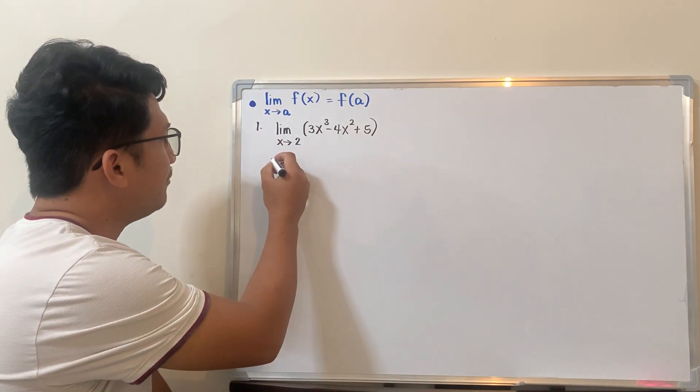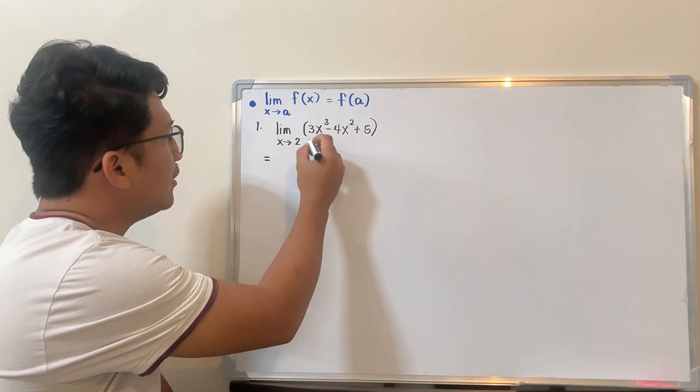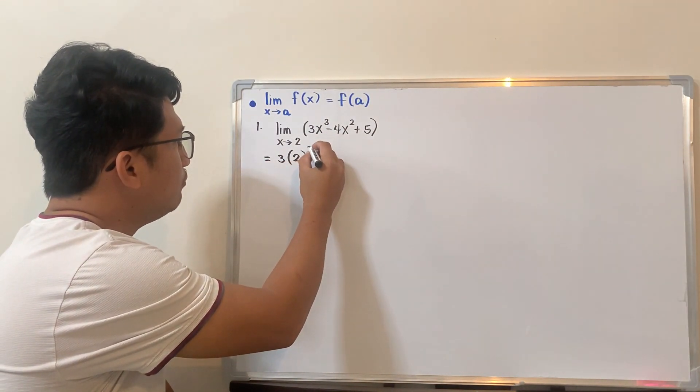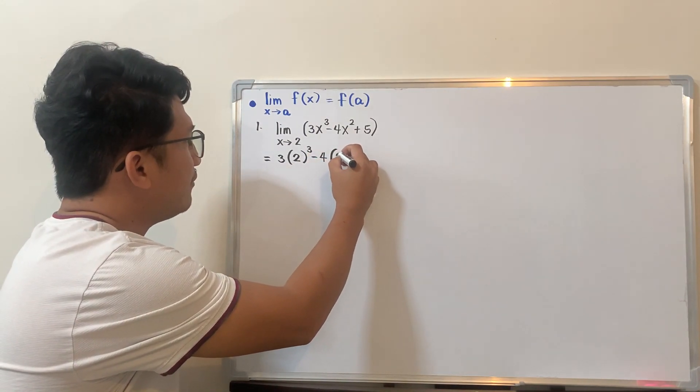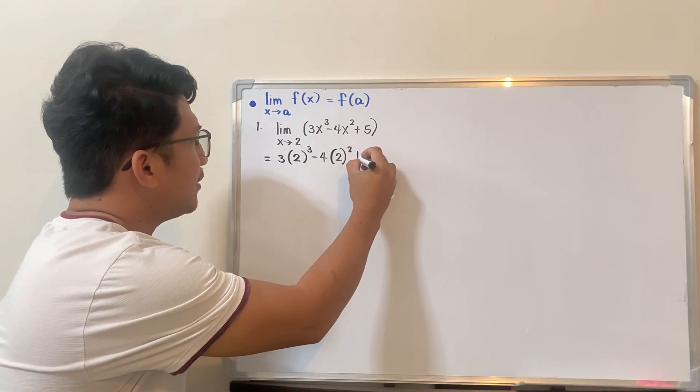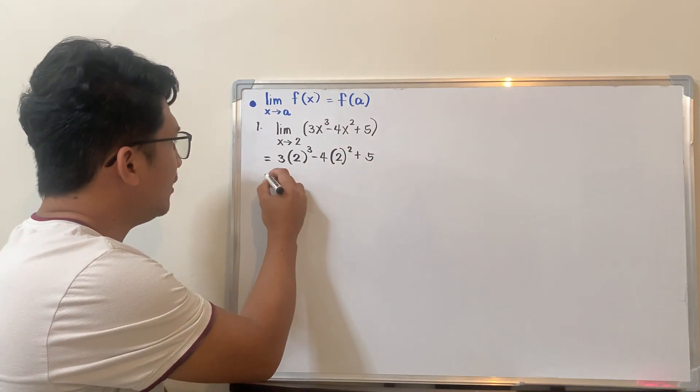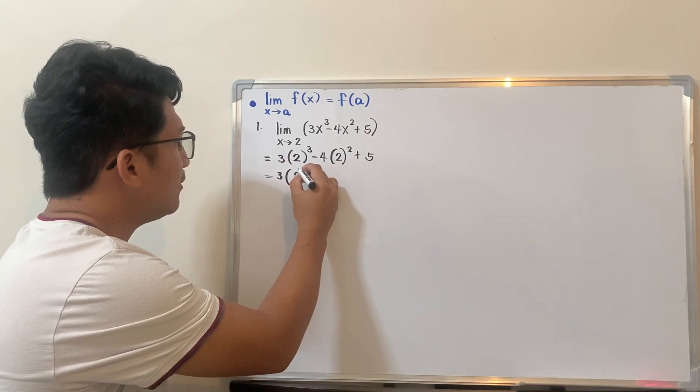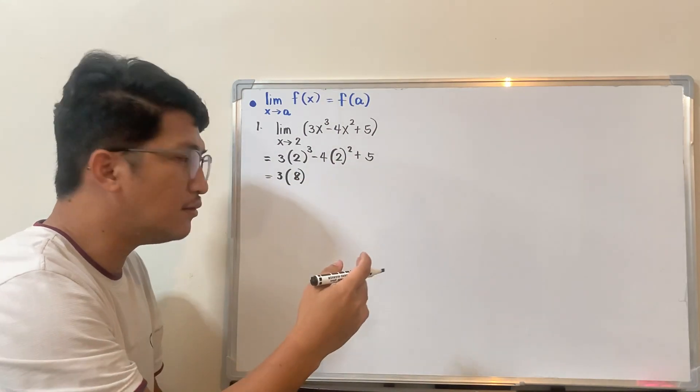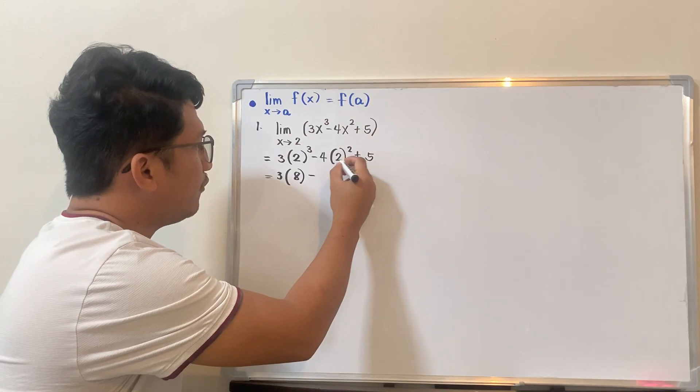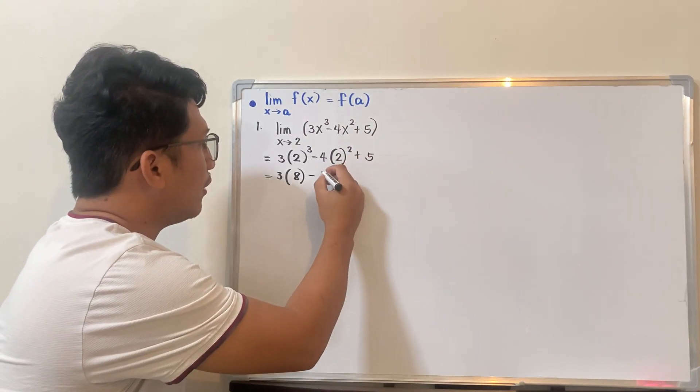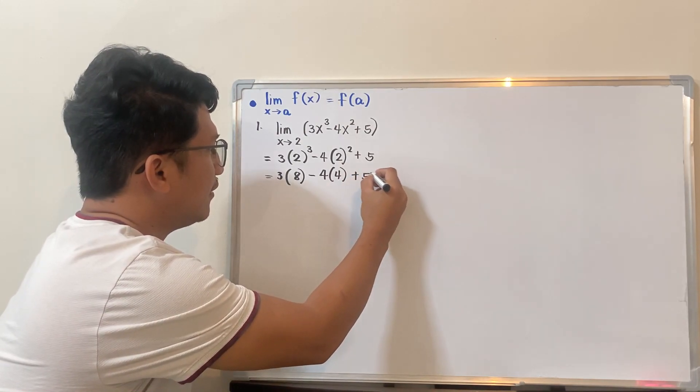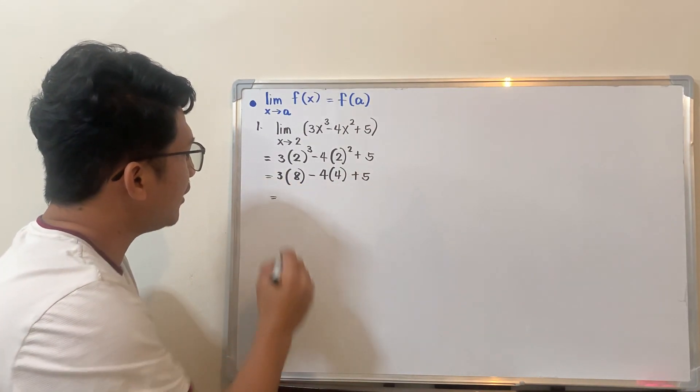So for this example, the solution is simple, right? So that becomes 3 times 2 cubed minus 4 times 2 squared plus 5. You will come up with 3 times, this is 8, 2 cubed is 2 times 2 times 2. And then you have 4 times 4 and then plus 5.